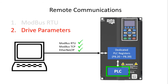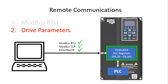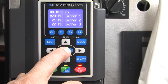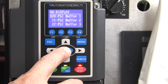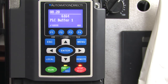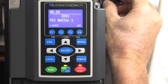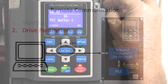The PLC is now just a coprocessor that adds functionality to the drive, which is all it was meant to be in the first place. And look at this — since each of these buffer registers is just a drive parameter, you can see what's in each register right on the keypad. So this gives you a quick way to see what the PLC is doing, which makes debugging communications with your remote controller super easy.